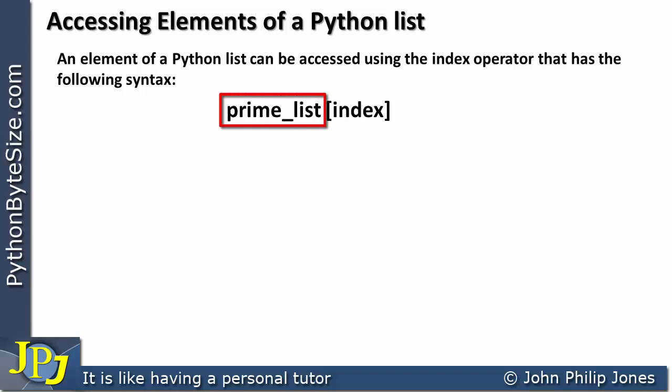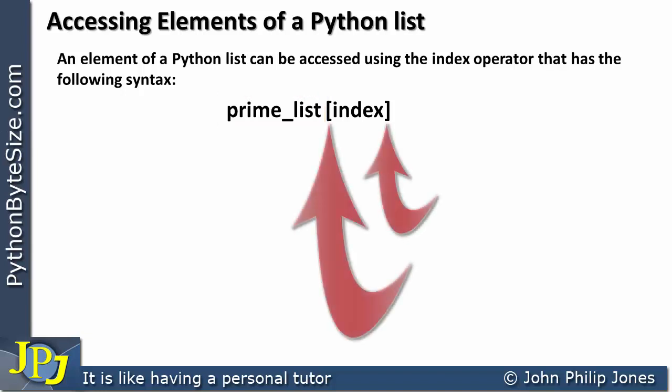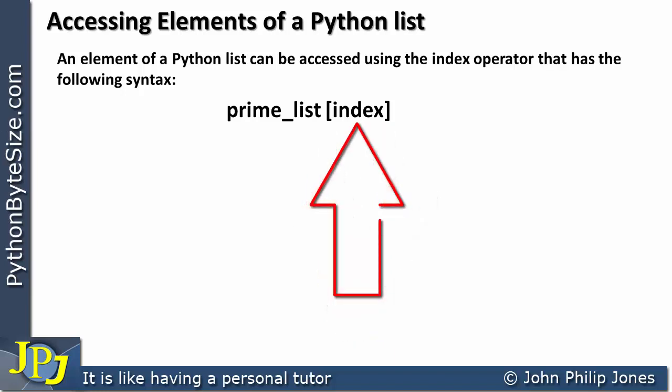Here you can see we have the name of a list and then we have the square brackets, and in the middle we have a variable named index. This index can have the value of 0 upwards — so it could be 0, 1, 2, 3, 4 and so on, depending on how long the list actually is.